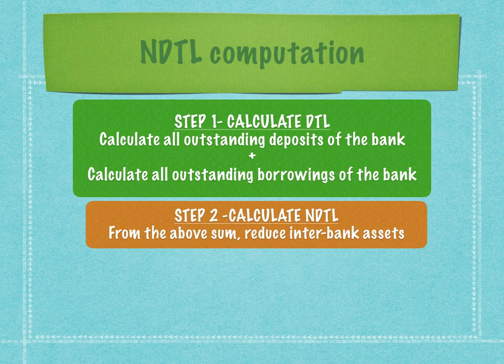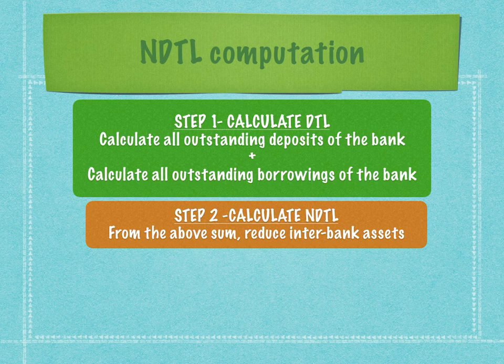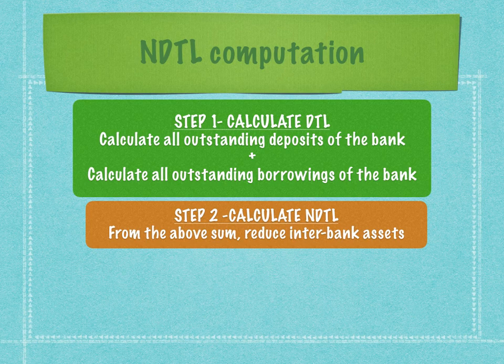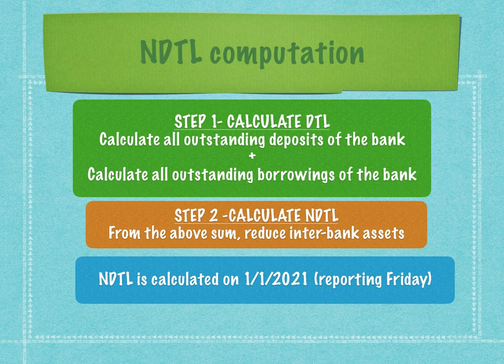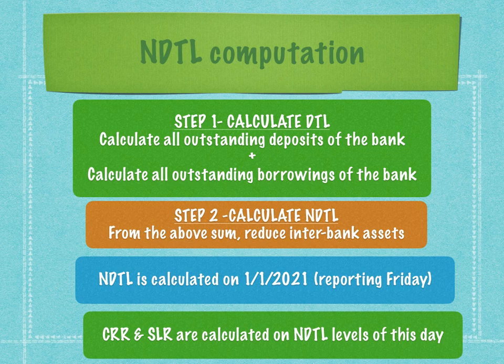From DTL, we now go to the second step: the calculation of 'net.' The first step is we aggregate; the second step is we deduct. What do we deduct? We reduce the interbank assets. For example, if Marvel Bank has taken a loan from another bank, it is also possible that Marvel Bank has given a loan to another bank. Therefore, interbank assets have to be computed by only one of the banks for the calculation of NDTL, and that amount has to be netted. NDTL is calculated on a specific reference date — for example 1st January 2021, the day on which Dr. Strange puts the money into the bank — and CRR and SLR are calculated on the NDTL levels of that particular day for every day during the fortnight.